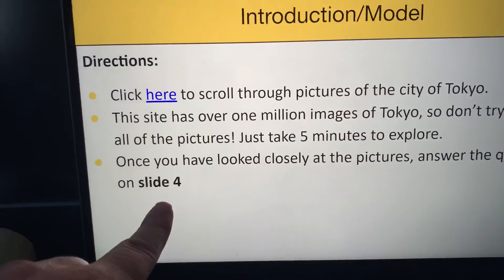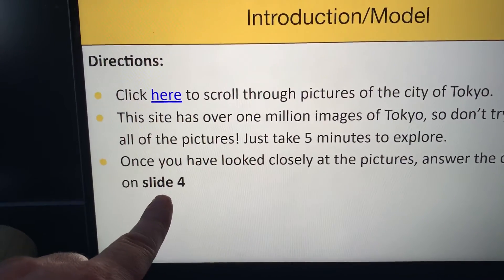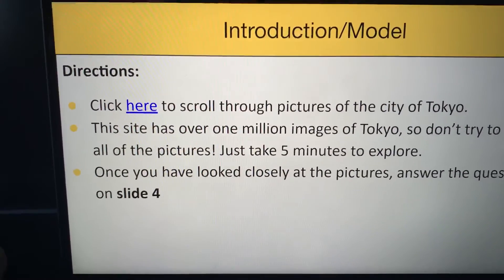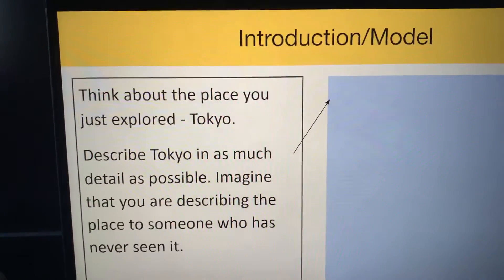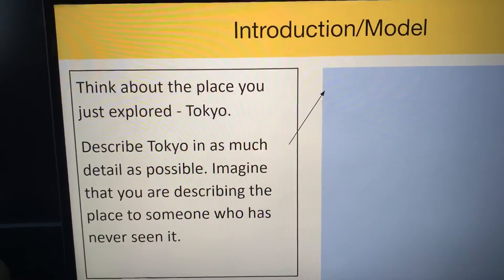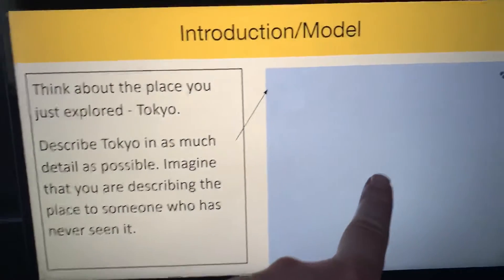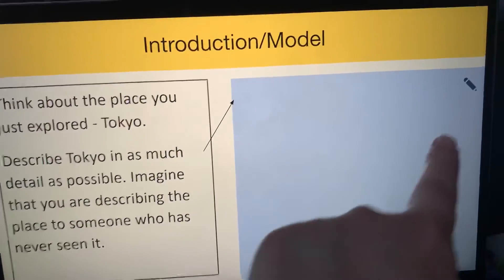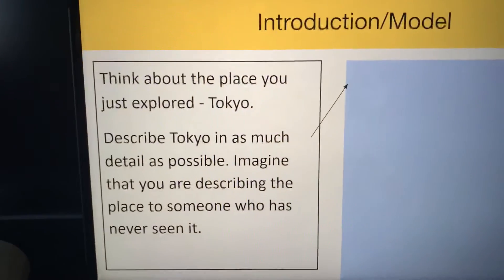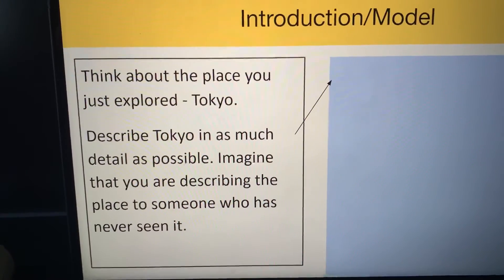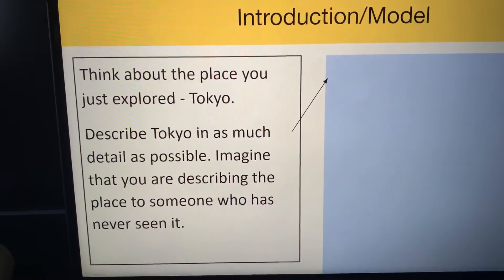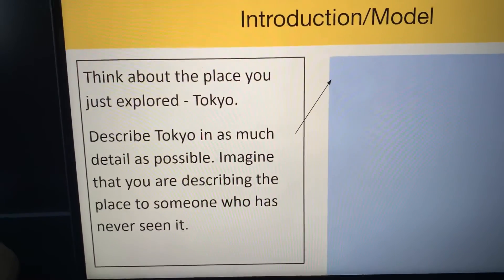Then on the next slide, slide four, you have to answer the question. The question is just asking you to think about the place you just explored, which is Tokyo, and describe Tokyo over here in this blue box with the pencil. Describe Tokyo in as much detail as possible. Imagine that you are describing the place to someone who has never seen it before.